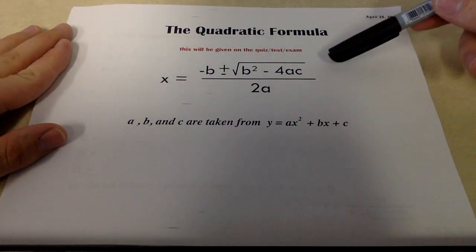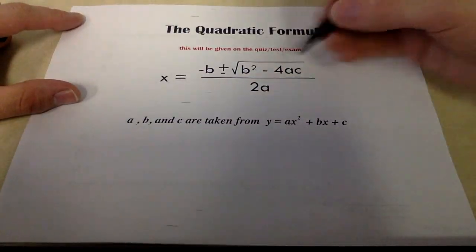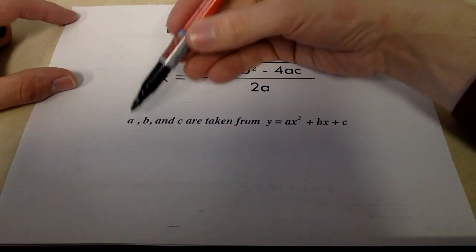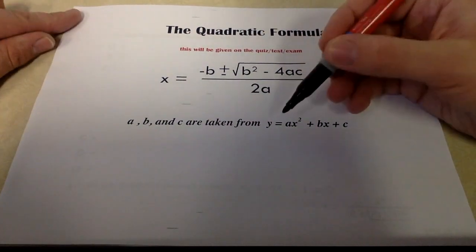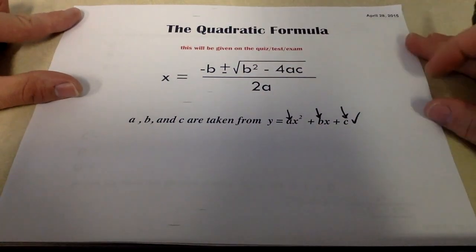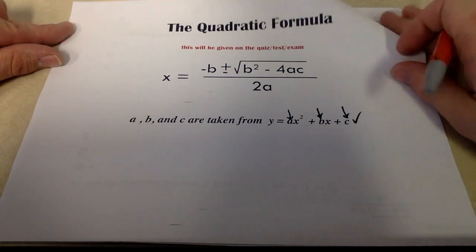It's a really big, ugly, nasty formula. It says the x-intercepts are equal to negative b plus or minus the square root of b squared minus 4ac all over 2a. Those a, b, and c letters come from standard form. So all we need to do is take these numbers and jam them into our formula and we'll be able to get some x-intercepts. Let's take a look at some examples.